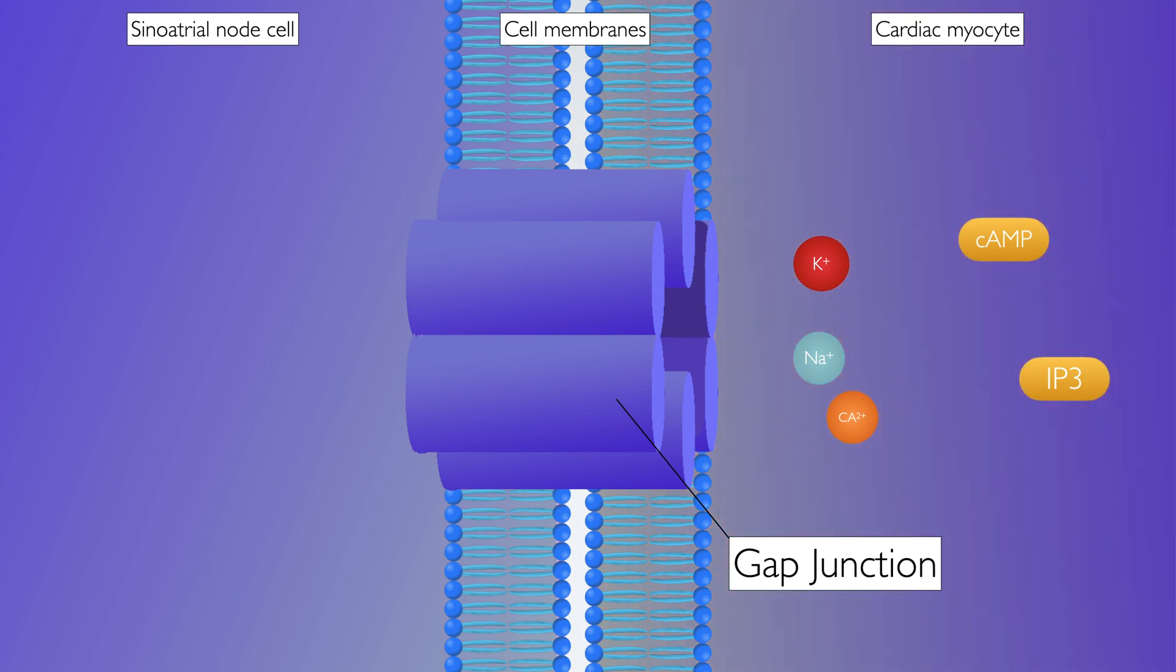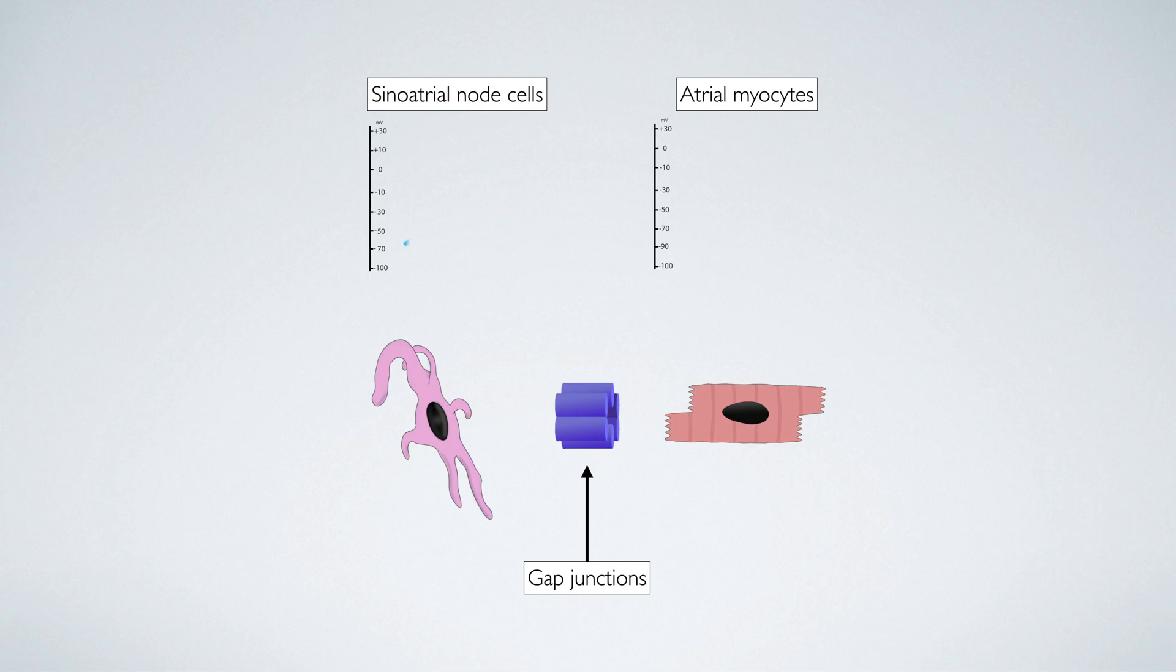So the action potential is propagated from the sinoatrial node through gap junctions into the surrounding tissues, and this cascades down from the atria all the way down to the ventricles.